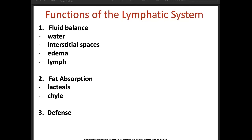The first function is fluid balance. Your lymphatic system collects excess fluid that drains from cells and tissues throughout your body and returns it to your bloodstream, which is then recirculated. We have your interstitial spaces — these are the fluid-filled areas that surround the cells in a given tissue, also known as your tissue space. If this fluid remains in the tissue space, edema will occur — in layman's terms, what we call 'manas.' The water will enter the lymphatic capillaries and be called lymph, which eventually returns to the bloodstream, maintaining fluid balance.